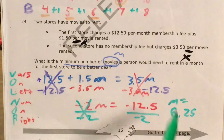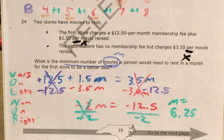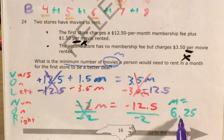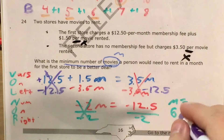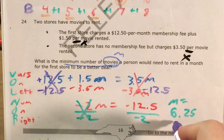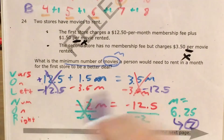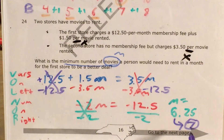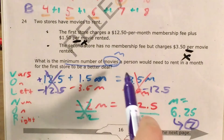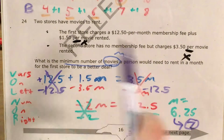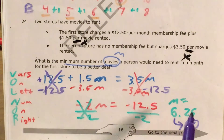Can I rent 6.25 movies? No, no store has that policy. In order to find the minimum number of movies, it has to be the next whole number above 6.25, which is 7. So even though my solution was 6.25, my answer to the problem — the minimum number of movies a person would need to rent in a month for the first store to be a better deal — is 7 movies.